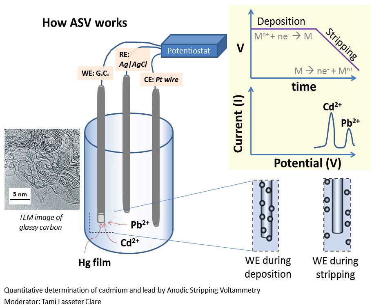The counter electrode is a piece of platinum wire, and the reference electrode is a silver chloride electrode. You'll need to check to make sure that the silver chloride solution is full within the glass housing and that there are no bubbles in the reference electrode — that will take a couple of minutes at the start of the lab period. The working electrode is a piece of glassy carbon, which is conductive for reasons much like why graphite is metallic, due to the overlap of the HOMO and LUMO, or as material scientists call them, the valence band and the conduction band.